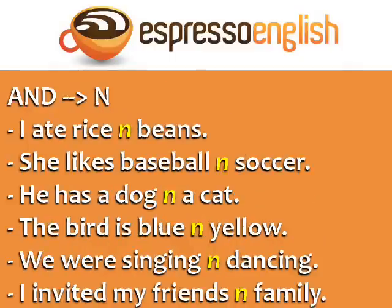The word 'and' often becomes a reduced sound: 'I ate rice and beans.' 'She likes baseball and soccer.' 'He has a dog and a cat.' 'The bird is blue and yellow.' 'We were singing and dancing.' 'I invited my friends and family.'